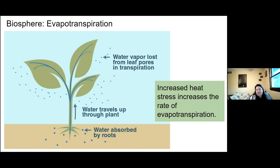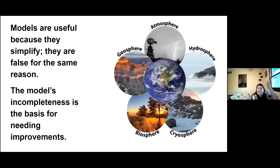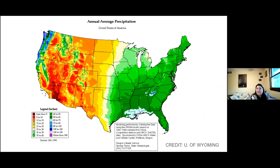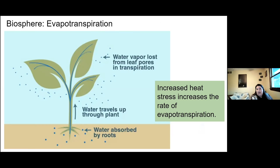In the summertime, when heat stress cranks up, the rate of evapotranspiration increases. The water gets taken up even more, we irrigate more. That water goes up into the wind and gets blown toward the east. That's the reason that we have this precipitation happening on the eastern part of the United States.